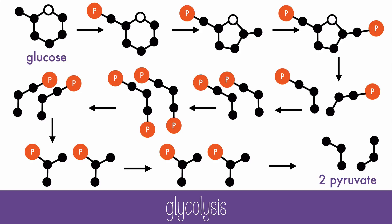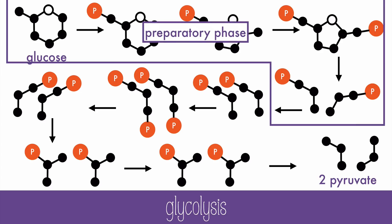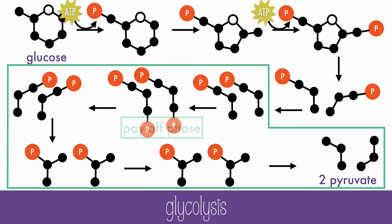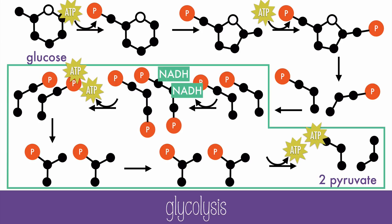The first five steps are part of a phase called the preparatory phase, where ATP molecules are required in two of the steps. The last five steps are the payoff phase, where four ATP molecules are created along with two NADH molecules. Because two ATP molecules are used in the preparatory phase, glycolysis has a net production of only two ATP and two NADH, along with two pyruvate molecules.